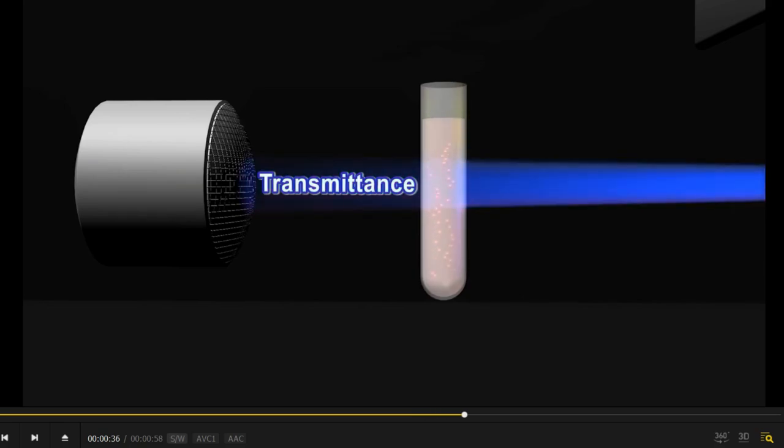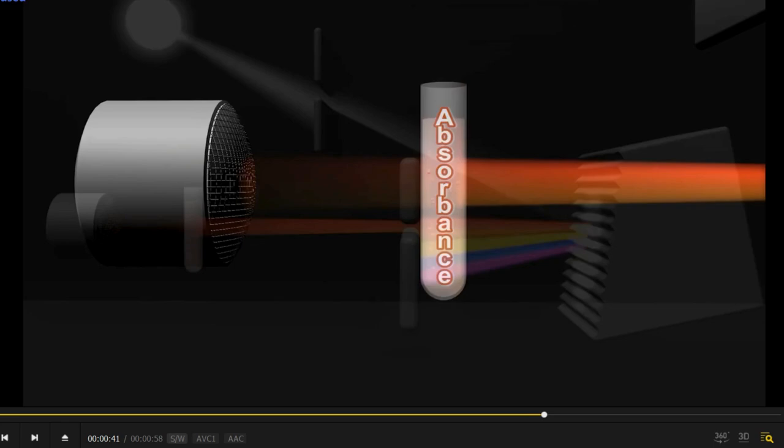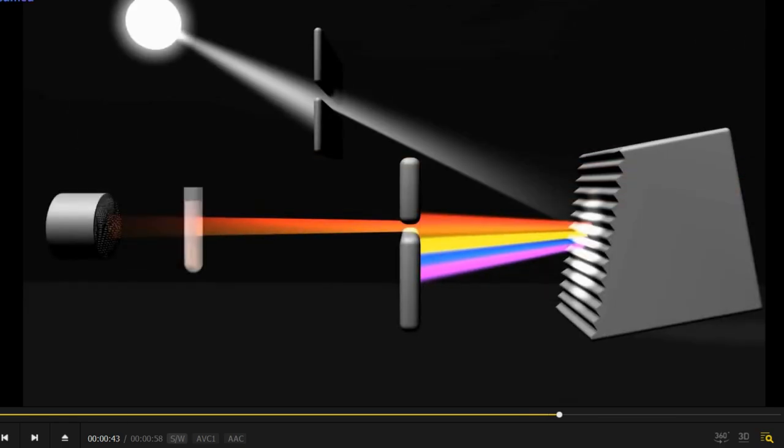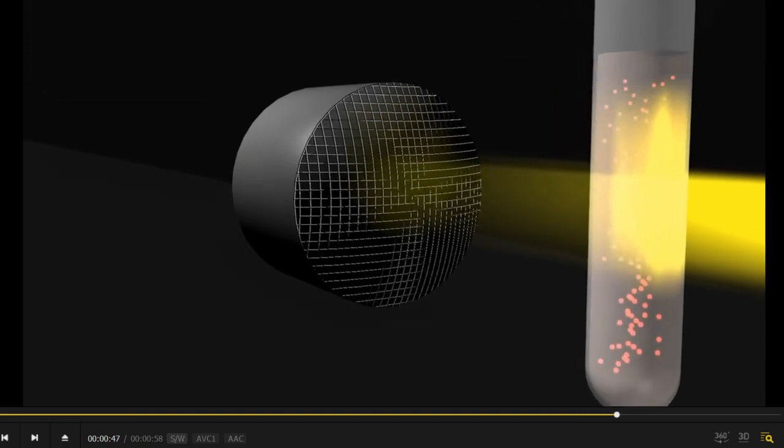When this single wavelength light passes through the homogeneous solution, the absorbance takes place and after absorbance, as you can observe, the intensity of transmitted light is going to be less. You can observe the intensity is less. This is called the transmittance of light.